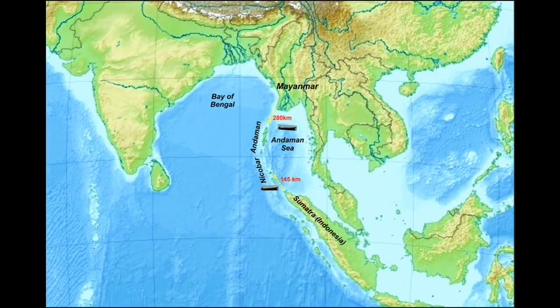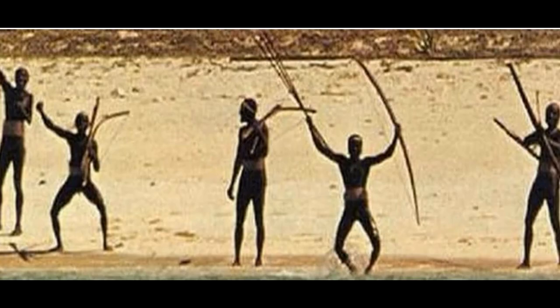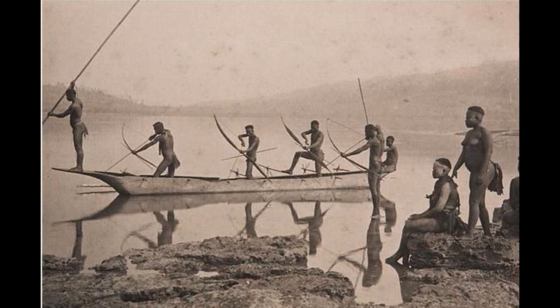Since Andaman and Nicobar are islands surrounded by sea, one is intrigued to know how and when men appeared on this isolated patch of land. The people who inhabited the Andaman islands are largely of two types: the Negrito tribes, who live in the Andaman, and the Mongolite tribes, who live in the Nicobar. The Negrito tribes are the Great Andamanis, Ongis, Jarwas, and Sentinels, whereas the Mongolite tribes are the Shompen and the Nicobaris.